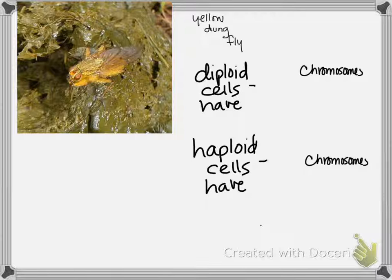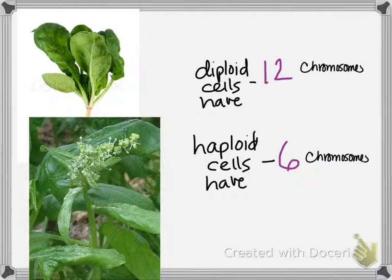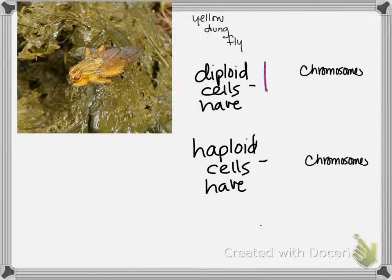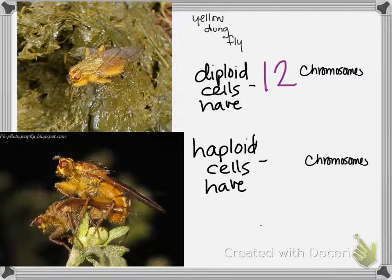This is a yellow dung fly. Yellow dung flies — because their common name is not all that creative — are yellow and live in dung, which is poop. More or less complicated than spinach? They also have 12 chromosomes. Yellow dung flies reproduce sexually, so how many chromosomes are in each yellow dung fly egg or sperm? Six. Divide by two, like I said.